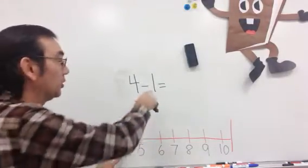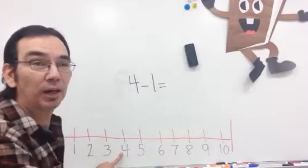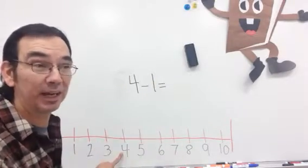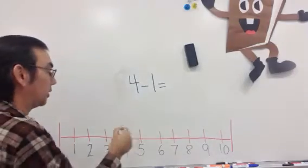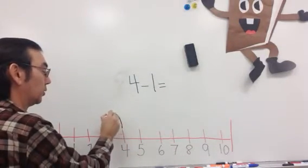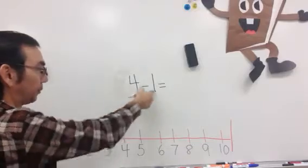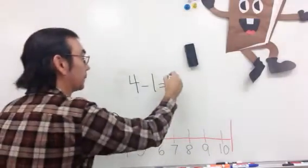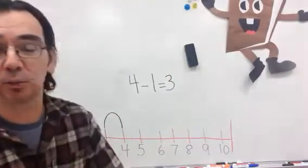Four minus one. So this one now means that we're going to hop back one spot, one time. And we're going to count once we land, right? So we start here at four. We count one. That's how many hops we're doing. We end up landing on the number three. So four minus one is three.